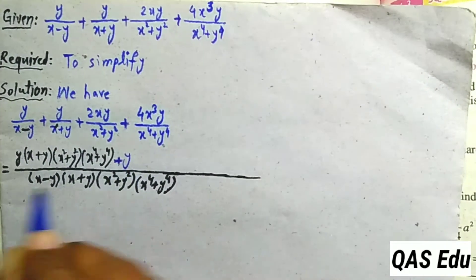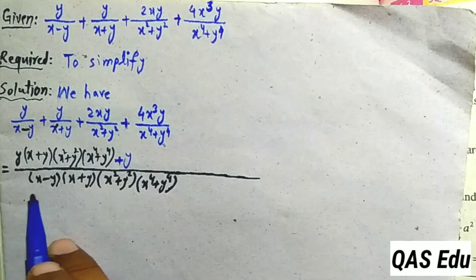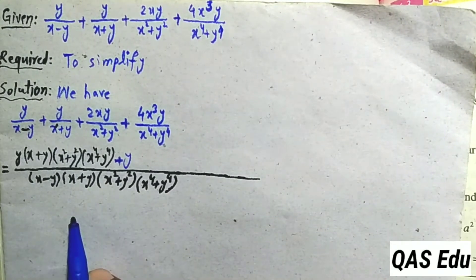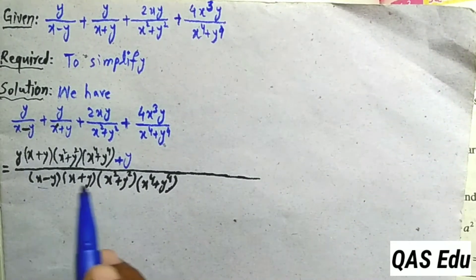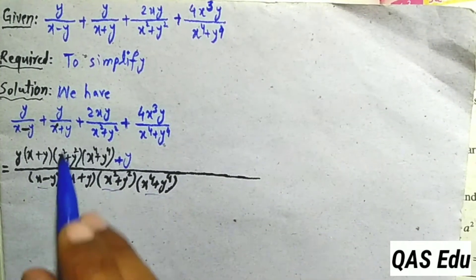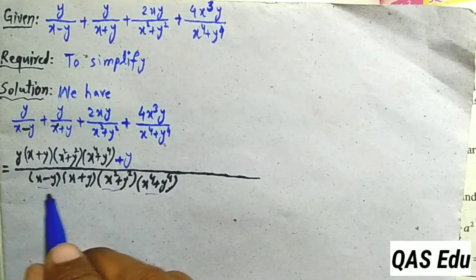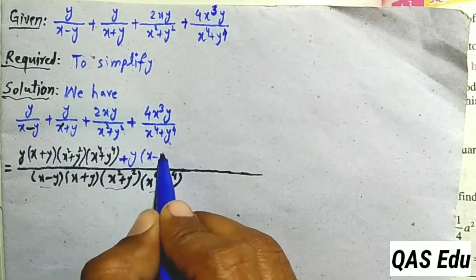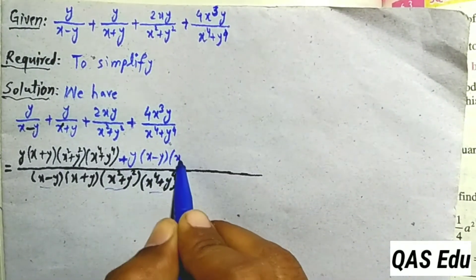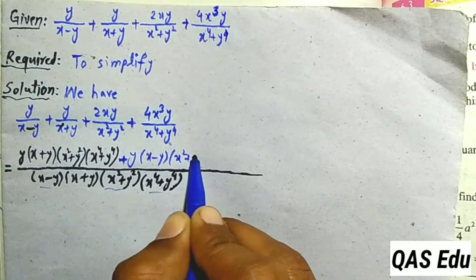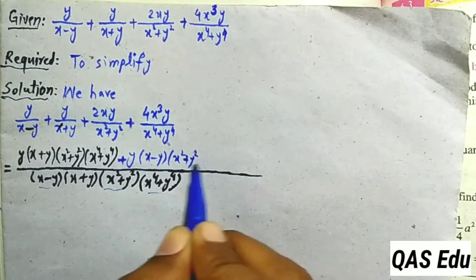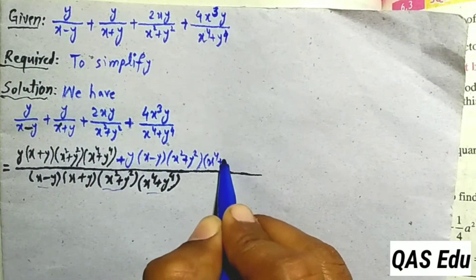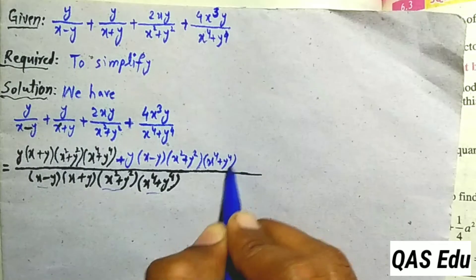Back: (x+y) divide, (x+y) cancel. Three factors: y multiply, x minus y, x²+y², x⁴+y⁴.